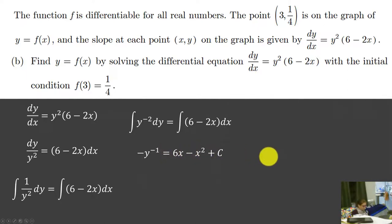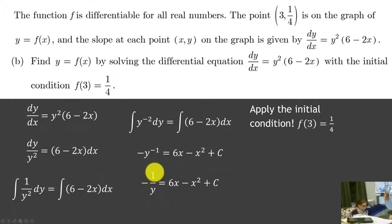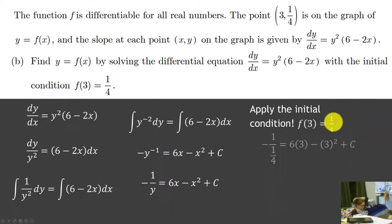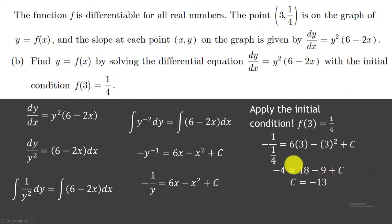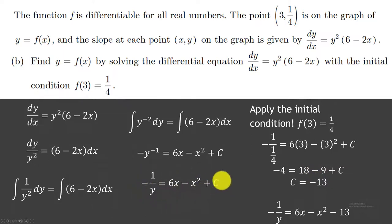So we get negative y to the negative 1 equals 6x minus x squared plus C. Let's rewrite using exponential rules and use the initial condition right now. With x equals 3 and y equals 1/4, we substitute — we need to flip the fraction, multiplying by the reciprocal. We get negative 4 equals 18 minus 9 plus C. So C equals negative 13.